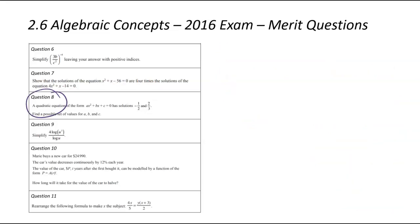We are now looking at question number eight. The quadratic equation in the form ax squared plus bx plus c has these solutions. Find a possible set of values for a, b, and c. This question was actually one of the harder achieved questions I've seen.